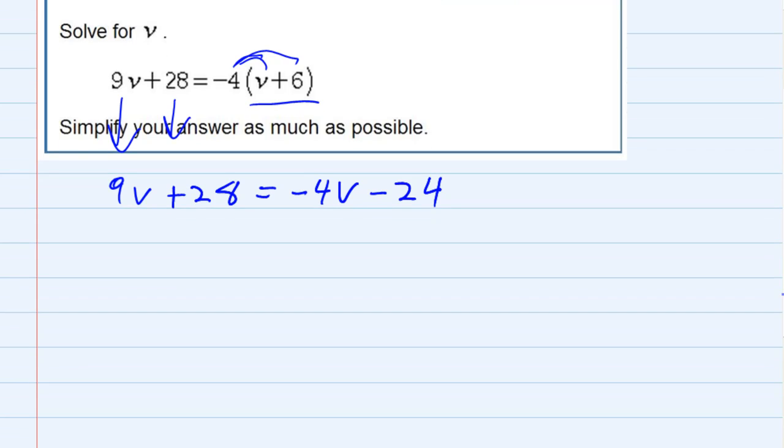So no more parentheses, we've used distribution to get rid of that, but now we have v's on both sides, and I would like to get my v's together and get the terms that do not have v's on the opposite side.